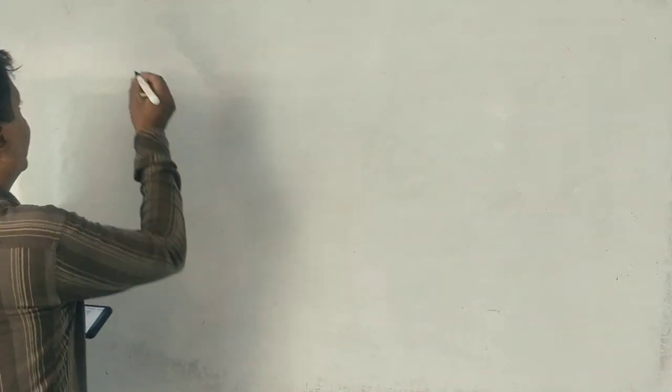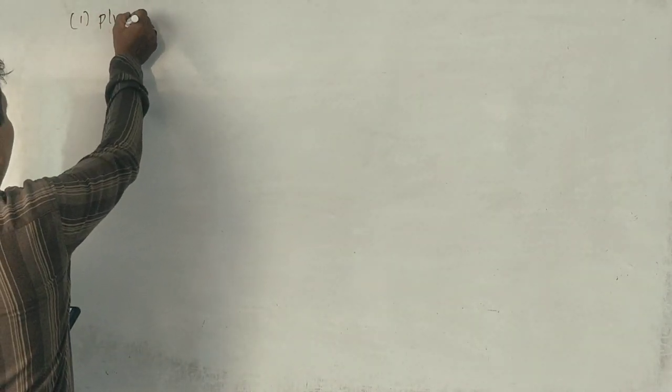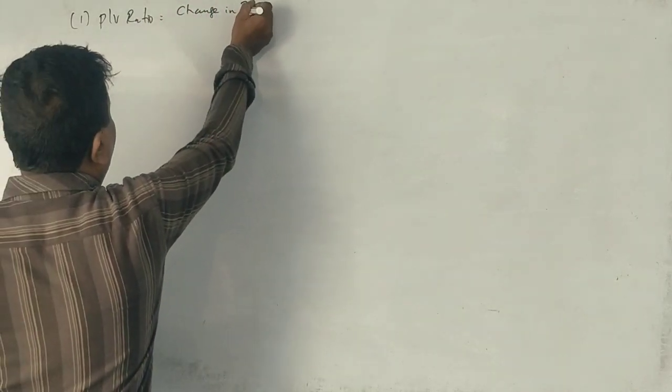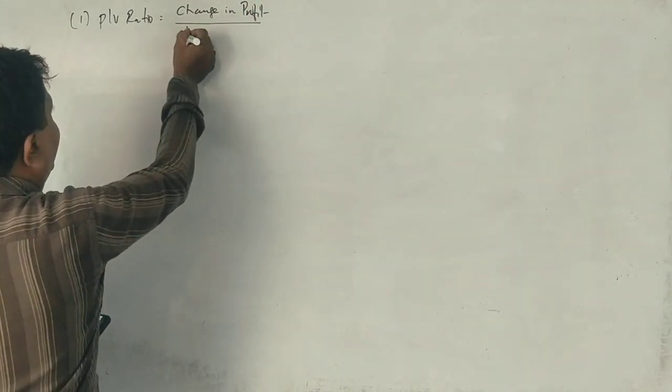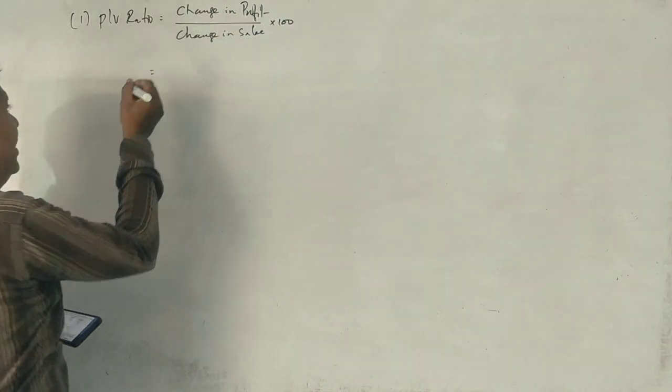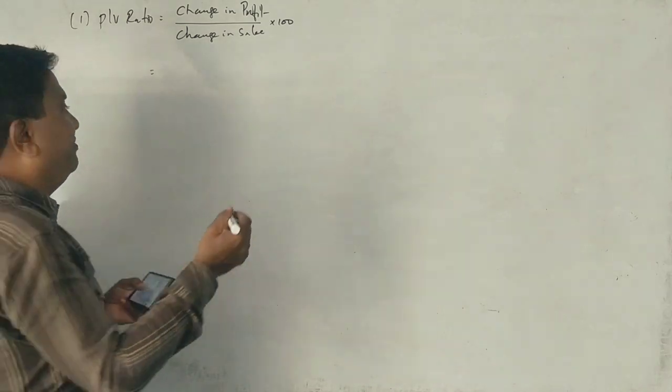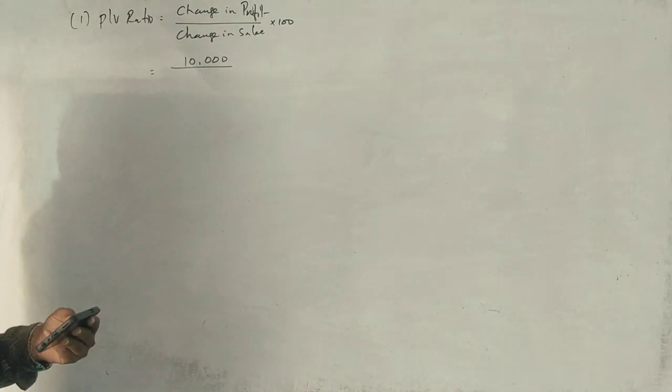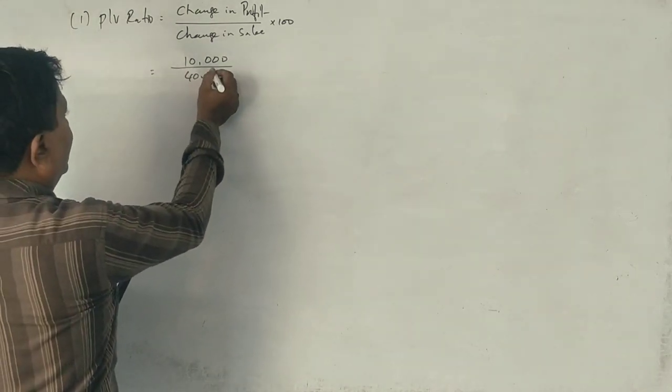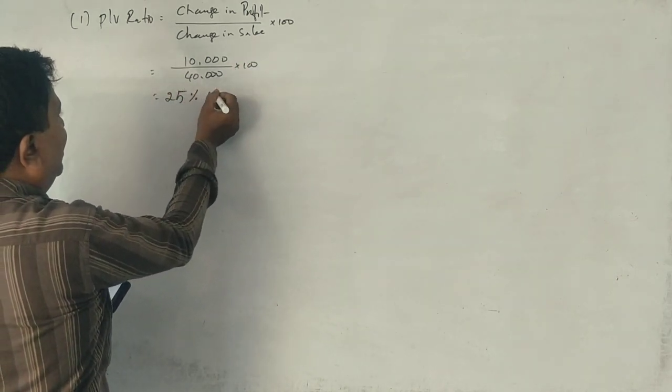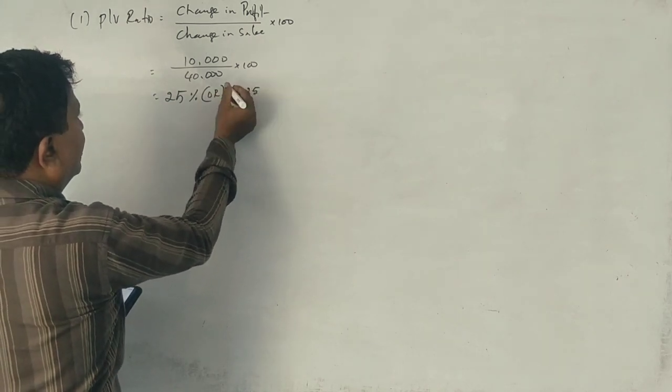First of all, PV ratio formula you know - change in profit divided by change in sales into 100. The profit is 50 minus 40, that's 10,000. Sales is 3,40,000 minus 3 lakhs, that's 40,000. So 10,000 divided by 40,000 into 100 equals 25%.